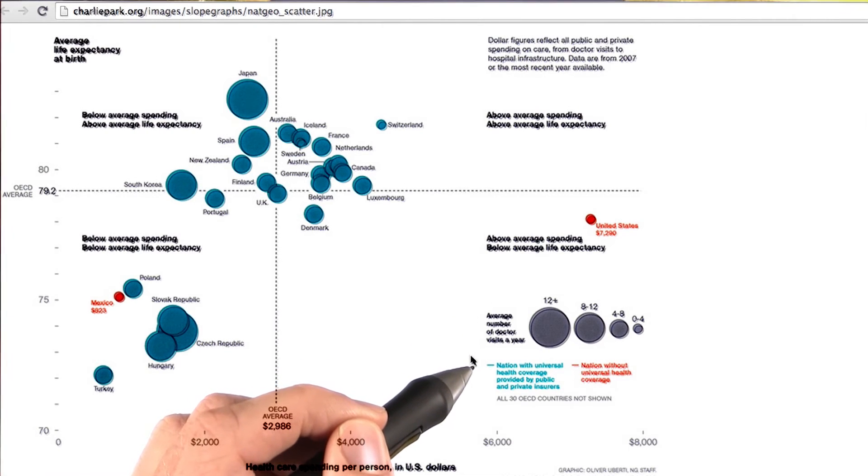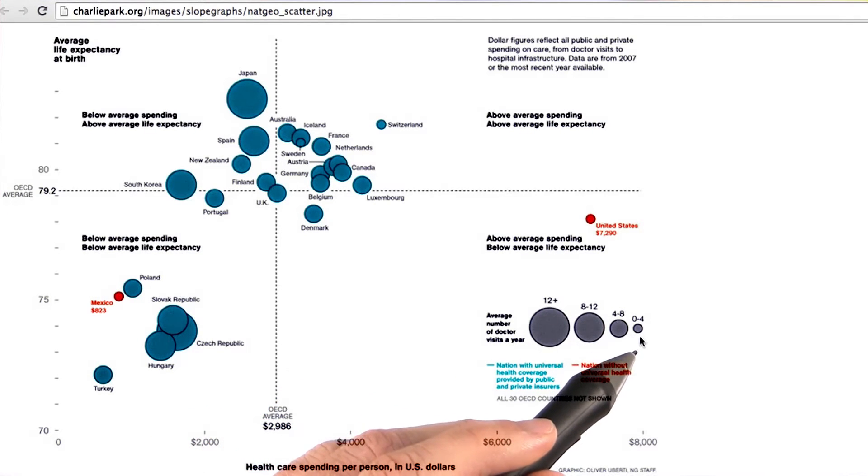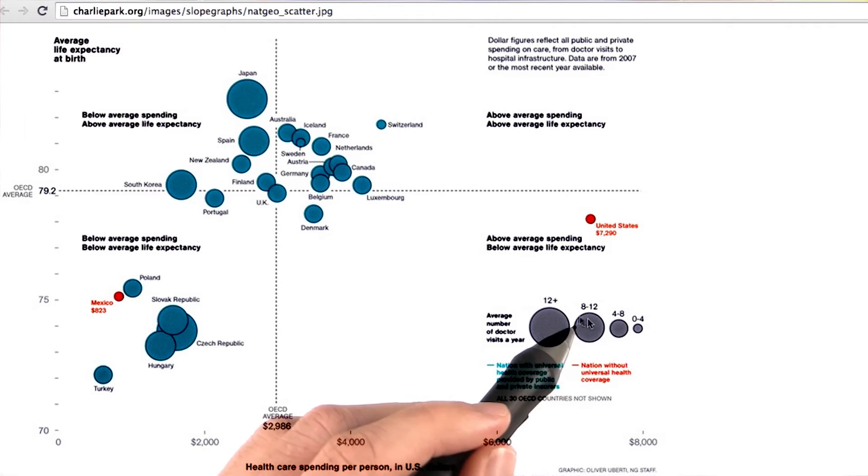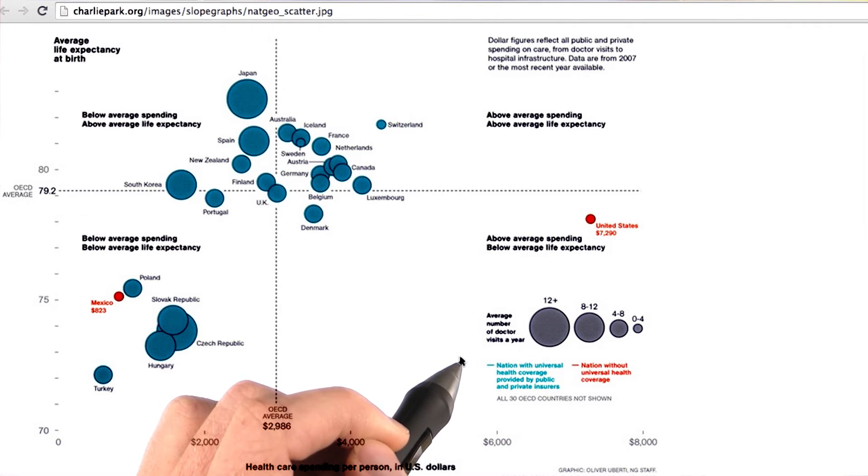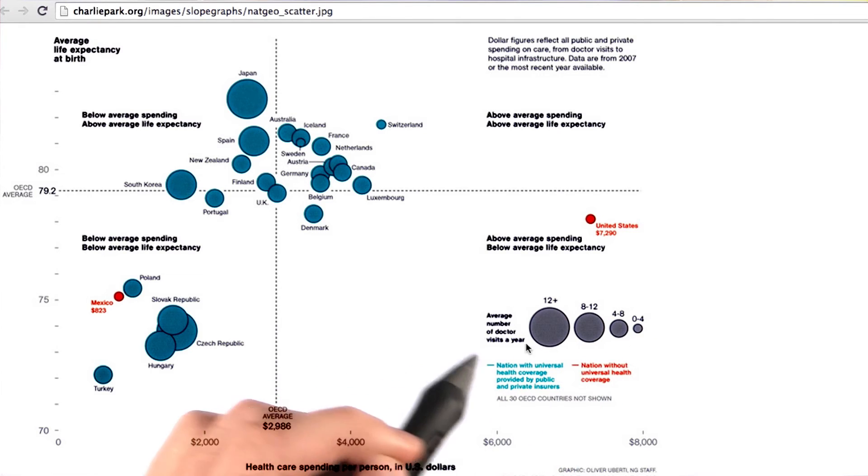Average number of doctor visits per year is represented by the size of these circles. And if we look closely, we can see that each of these circles corresponds to a range. So basically, we've taken quantitative data and split it up into bins, which makes this data type an ordered data type.